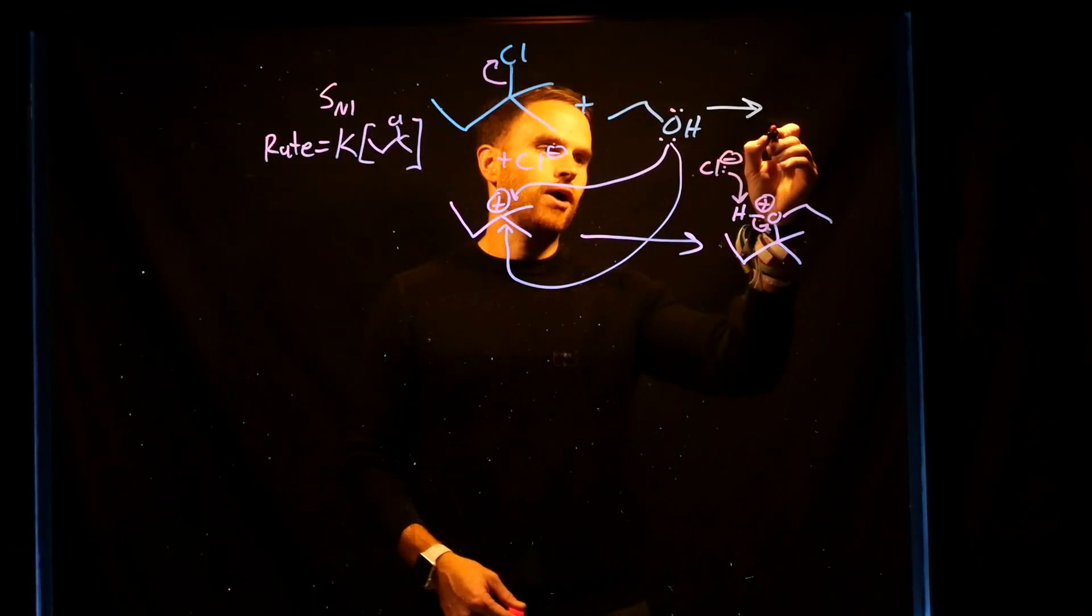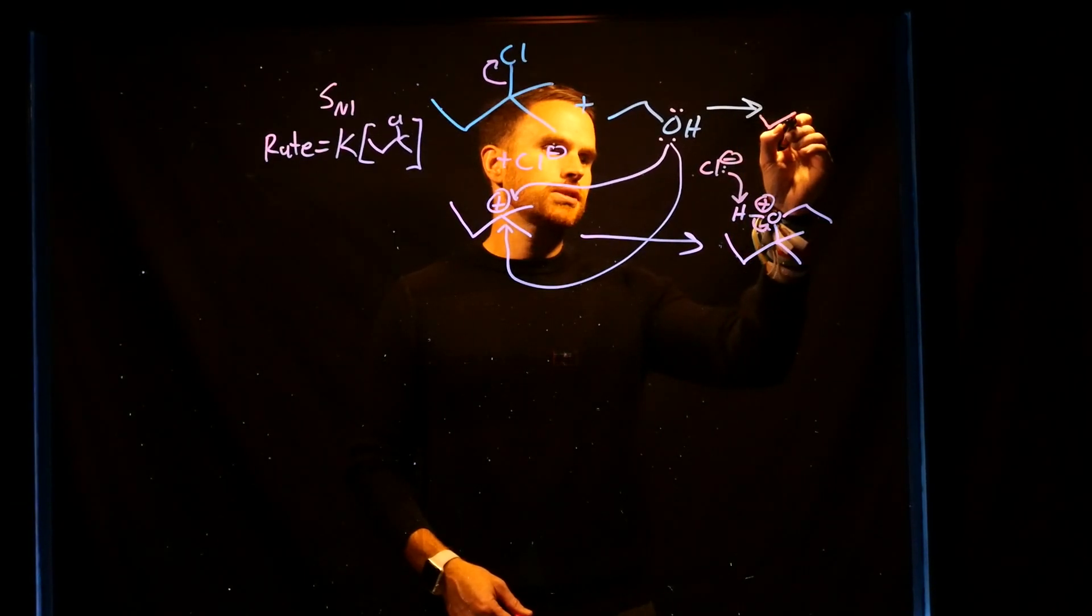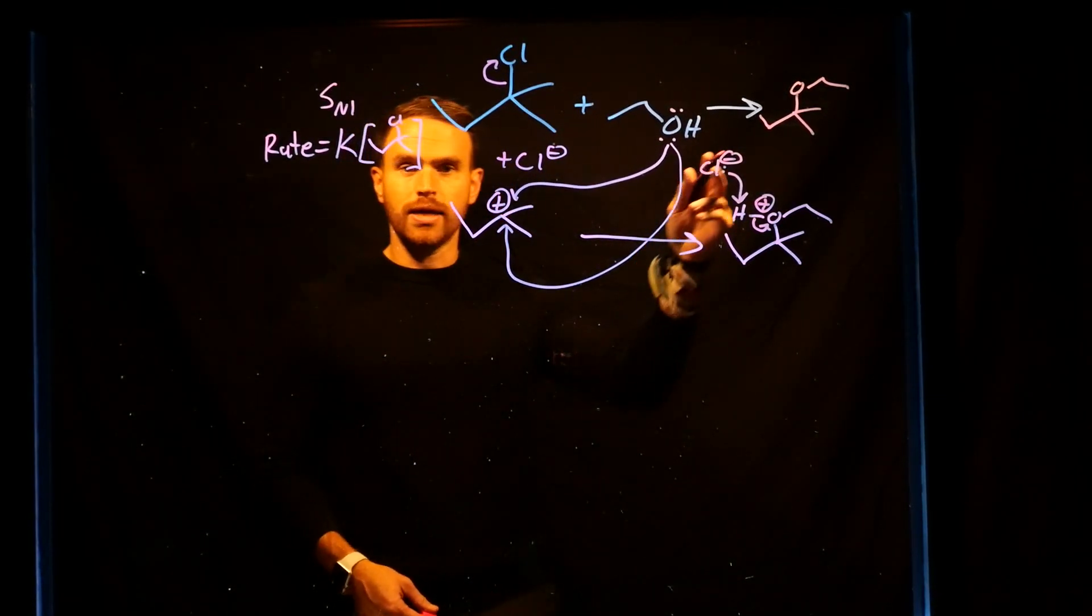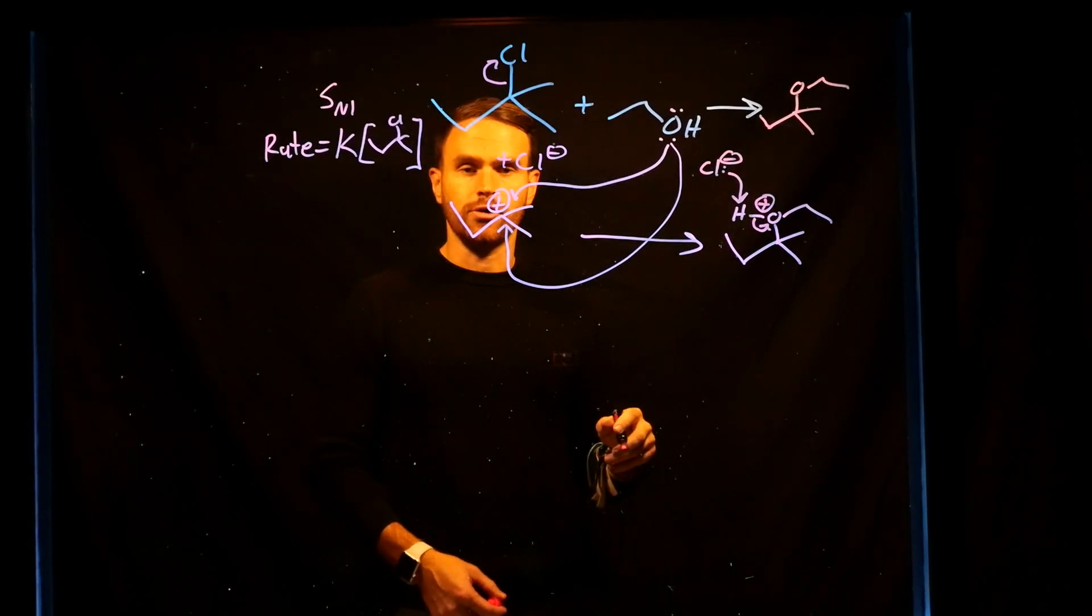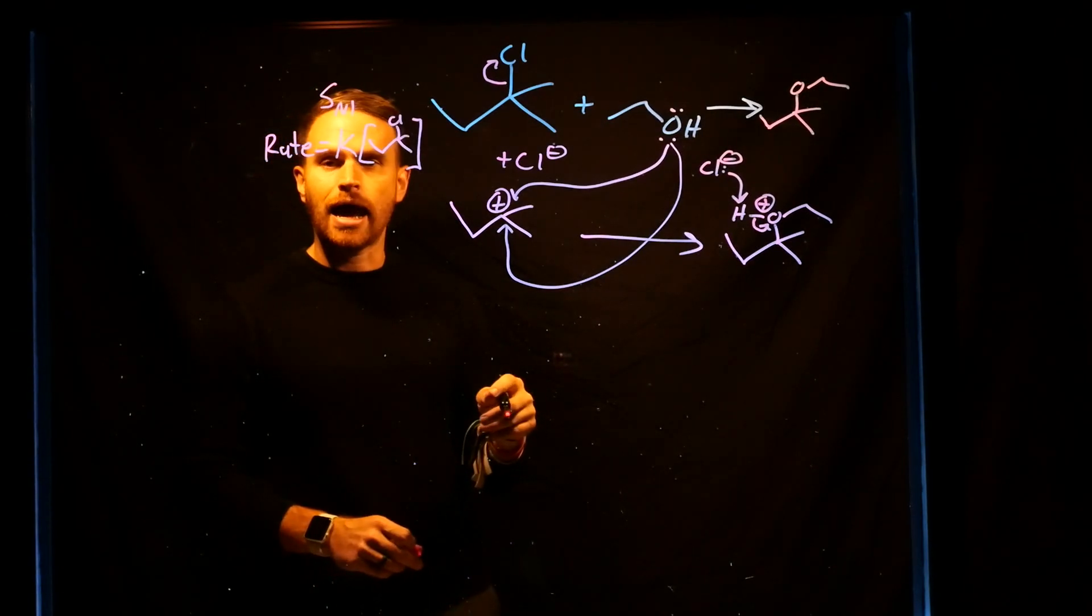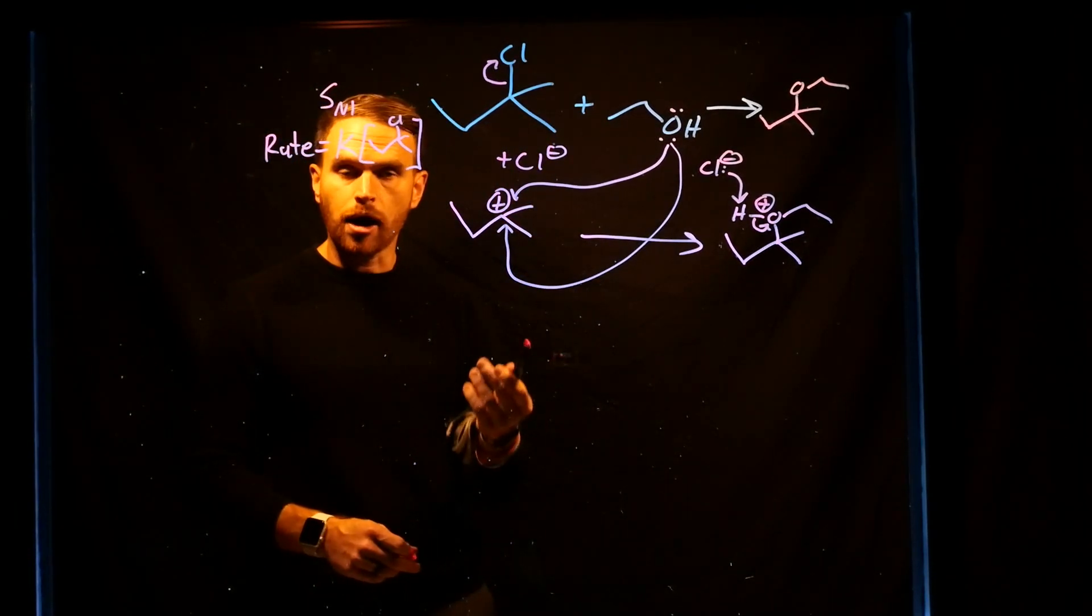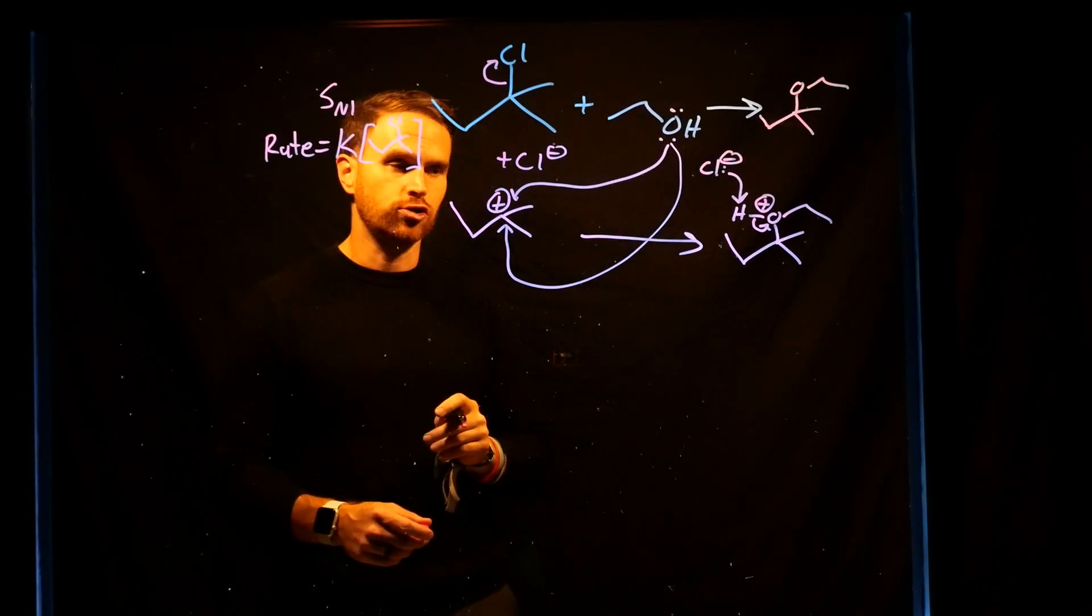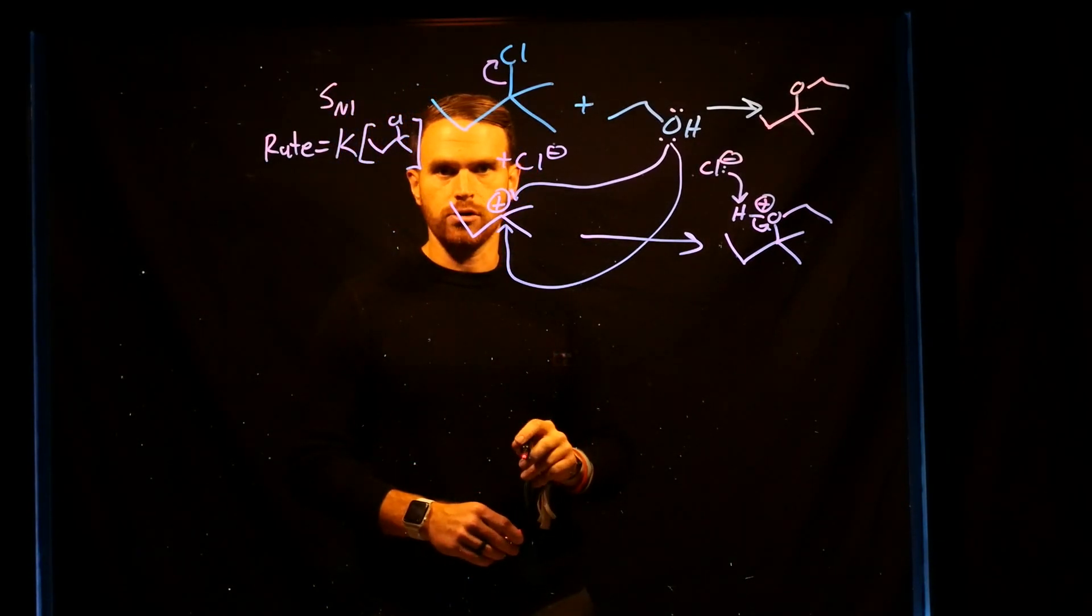This finally gives us our final product. We have now generated a new stereocenter. Although importantly, because the nucleophilic attack can happen either from the top or the bottom of the molecule, this is going to be a racemic mixture or a 50-50 mixture if we were to generate a stereocenter.